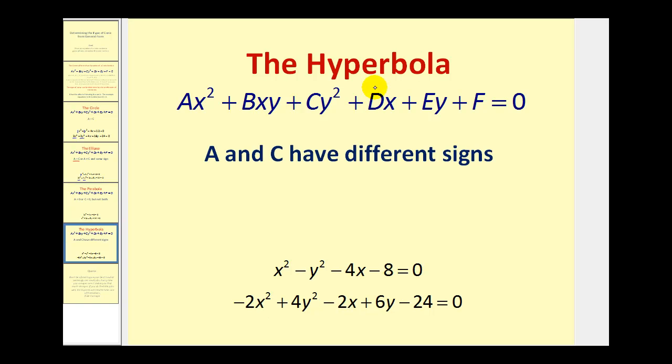The last conic we'll look at is the hyperbola. The equation will always be a hyperbola if A and C have different signs, or the coefficients of the x squared term and the y squared term have different signs.